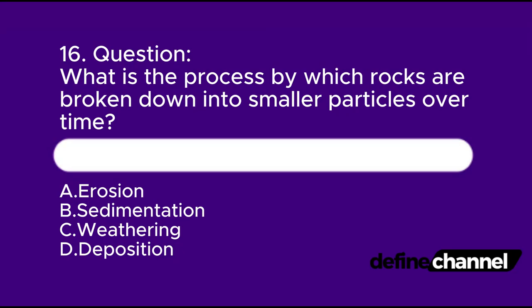Question 16. What is the process by which rocks are broken down into smaller particles? A. Erosion. B. Sedimentation. C. Weathering. D. Deposition. Which is the correct answer?